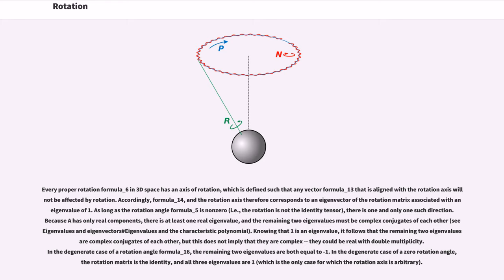Because A has only real components, there is at least one real eigenvalue, and the remaining two eigenvalues must be complex conjugates of each other. Knowing that 1 is an eigenvalue, it follows that the remaining two eigenvalues are complex conjugates of each other, but this does not imply that they are complex; they could be real with double multiplicity. In the degenerate case of a rotation angle of 180 degrees, the remaining two eigenvalues are both equal to minus 1. In the degenerate case where the rotation angle is zero, the rotation matrix is the identity, and all three eigenvalues are 1.